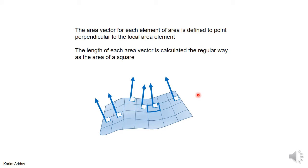This means that the direction of the area vector can be different at different locations on the surface. Here the normal vector points this way, but at another location the normal vector points a different way. So the area vector at different locations on a surface can have a different direction.